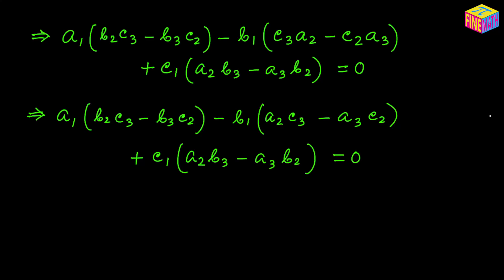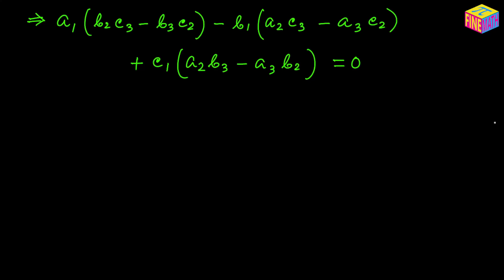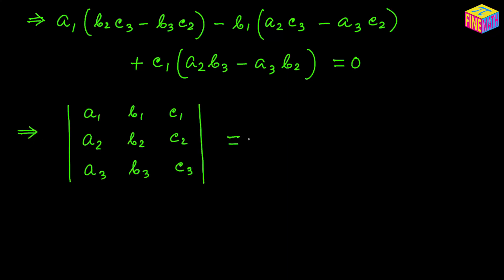Now if you look at the quantity on the left-hand side, this is nothing but a determinant of order 3. It will look like this and that equals 0. So you can easily remember it: if the value of this determinant is 0, then the three lines are concurrent.